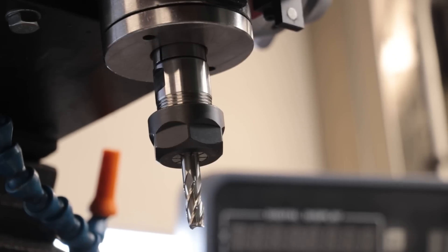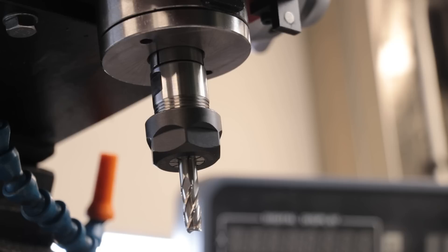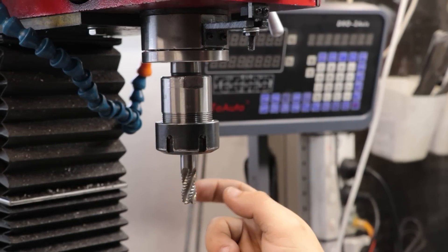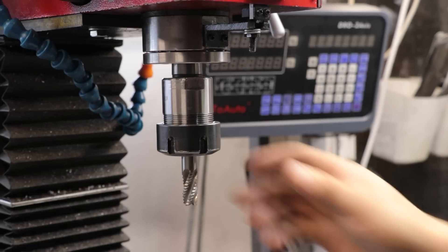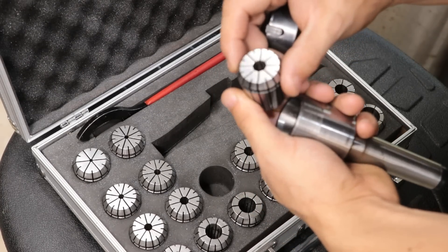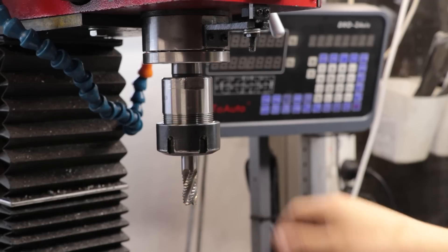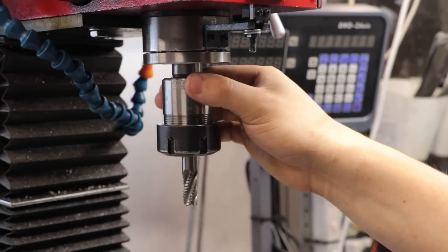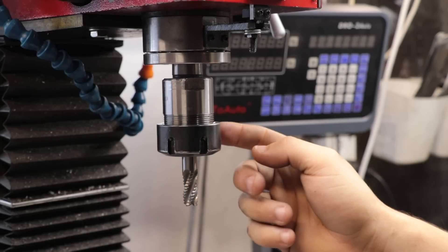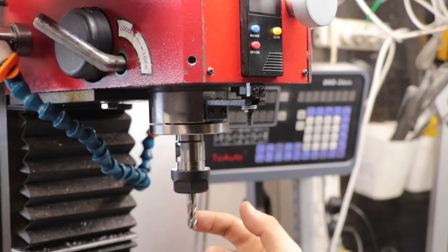The second upgrade I recommend is a quick change tooling system. It really changed how I used the mill. When I first got the milling machine I held everything in this Morse taper to ER32 collet chuck. But when it came time swapping tools in and out that could easily take two or three minutes, and to make one simple part may take four or five different swaps of tooling.